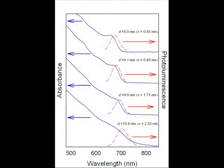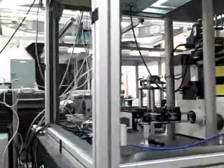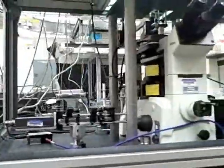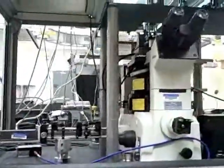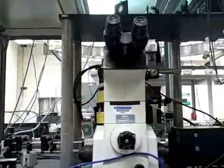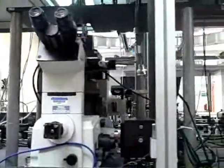From an optical standpoint, nanowires are interesting because their absorption and emission properties can be tuned by varying their diameter. Specifically, ensemble measurements reveal that as nanowire diameters decrease, a blue shift in their onset of absorption occurs with a corresponding blue shift in their photoluminescence peak. To determine the absorption and photoluminescence properties of individual semiconductor nanowires, we use single molecule microscopy and spectroscopy.